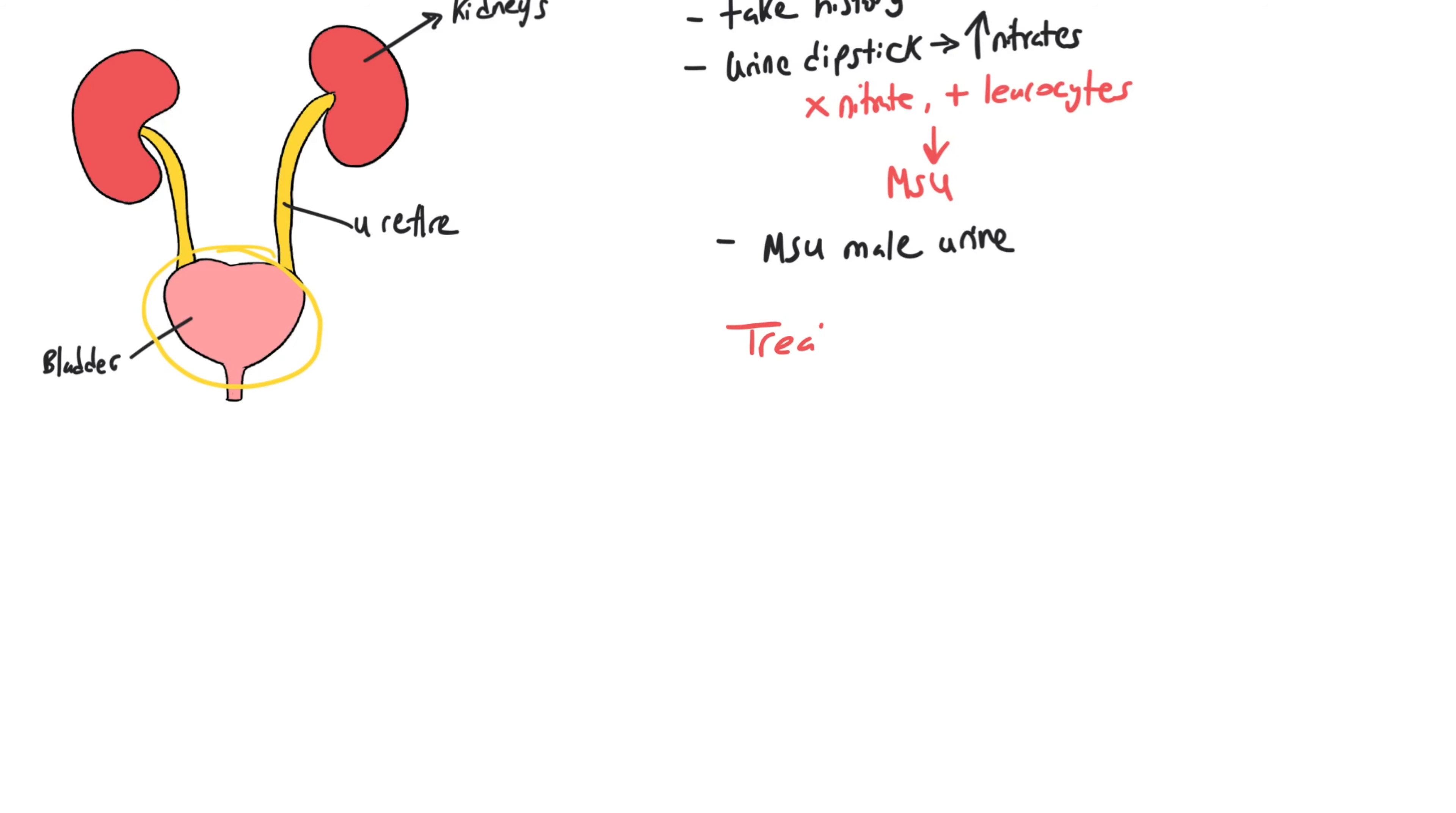So let's talk about treatment. NICE guideline advises three days nitrofurantoin, which is the main treatment for UTI or cystitis. The second line is trimethoprim, this is also for three days. And that's it for cystitis. Let's move to pyelonephritis now.